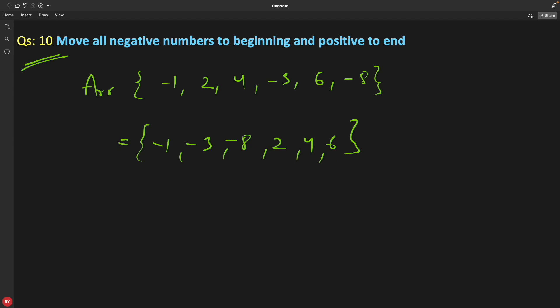Okay, then how would you solve this? So it is very simple. We'll take two pointers, left and right. Left will place here and right will place here. Before going there, I'll tell you the intuition behind this thinking.